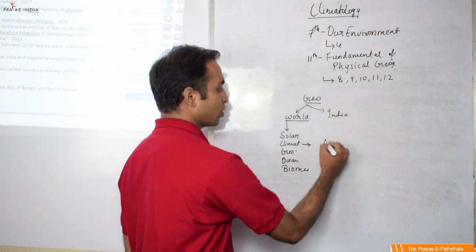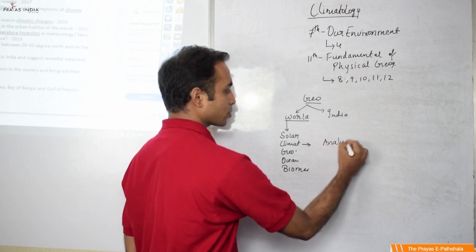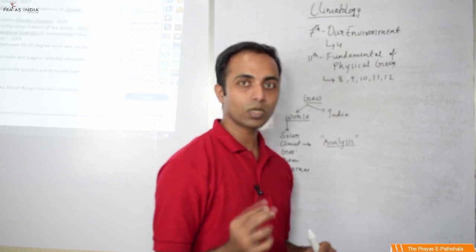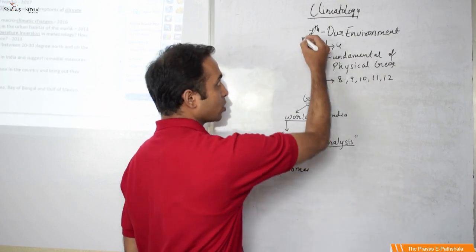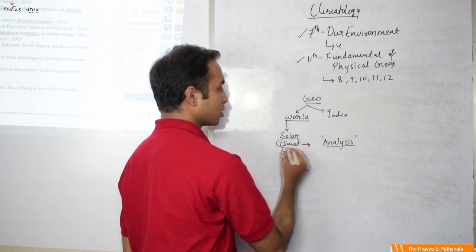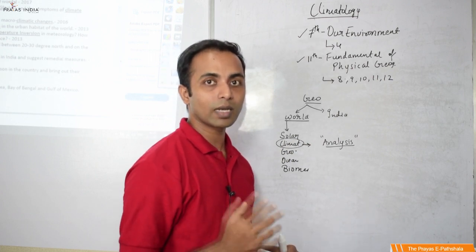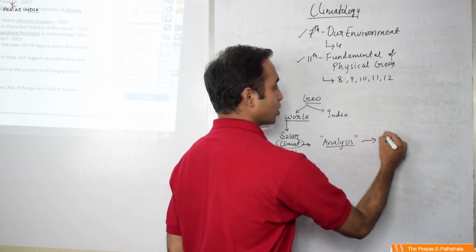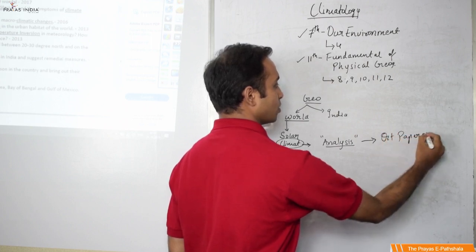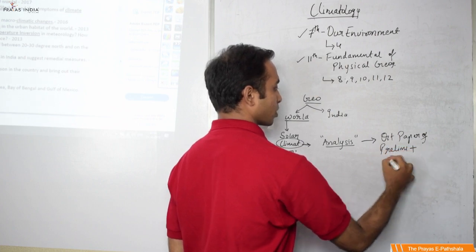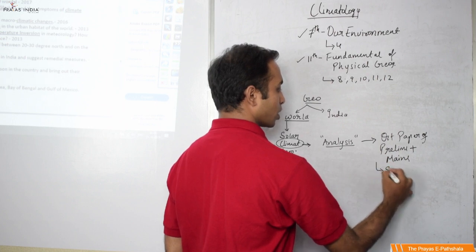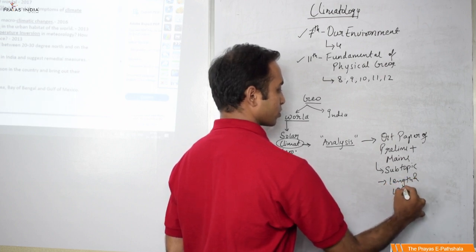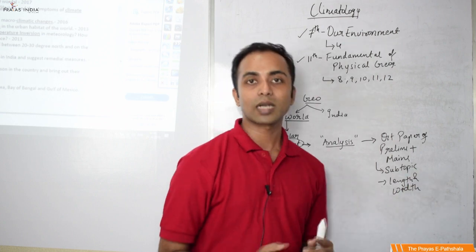Let us first do an analysis of the last 22 years of UPSC question papers, and then focus on what topics are to be covered and what are not. Since climatology is there in your 7th and 11th standard, we can even do a graduation or PhD in climatology, but the UPSC question paper of prelims and mains defines the length and width of climatology that is to be covered.